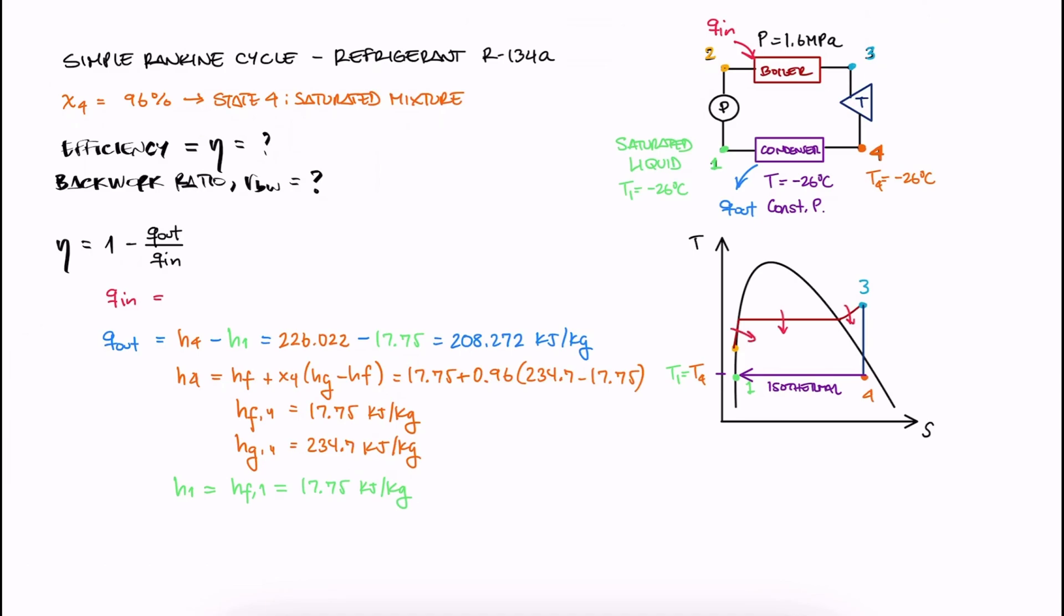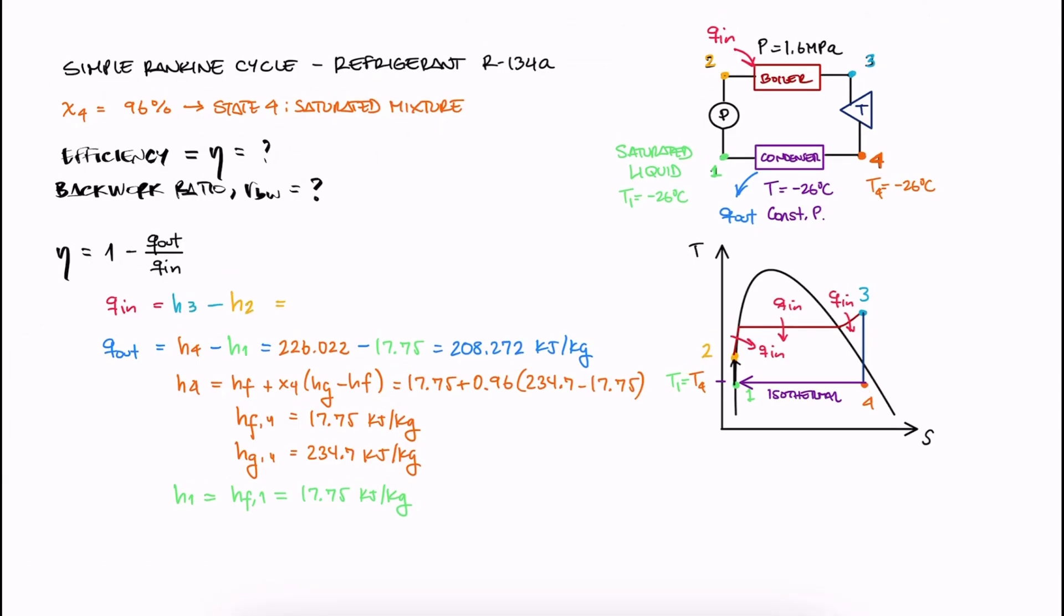Now for Q_in, we need H3 and H2. We only have the pressure at 3, since the pressure is constant at the boiler. We need one more independent property to fully describe state 3.